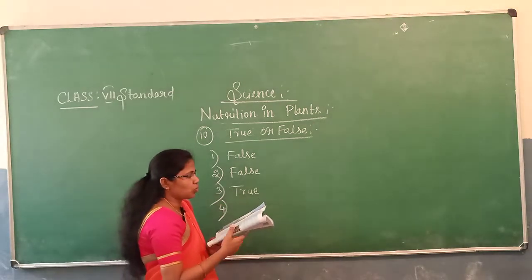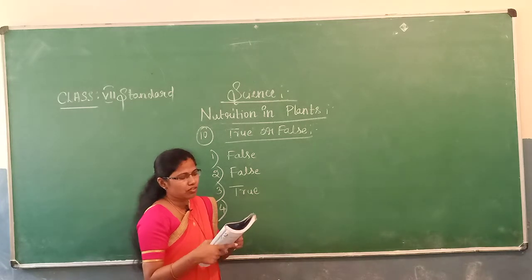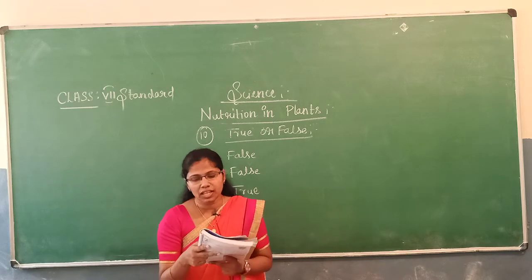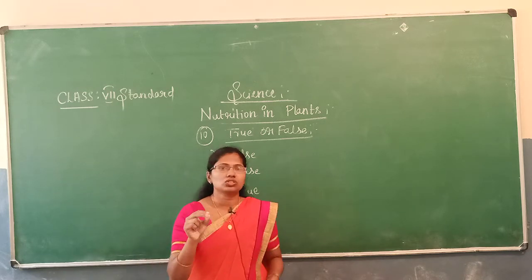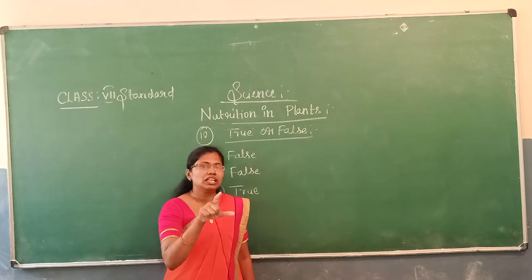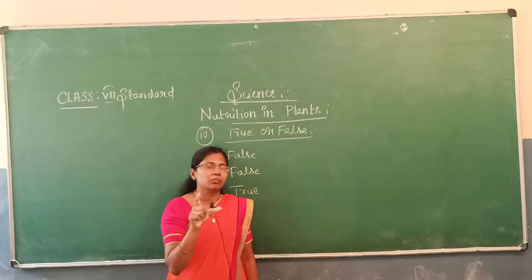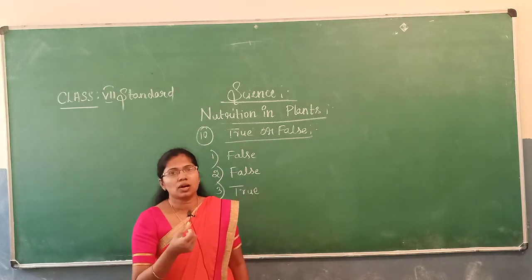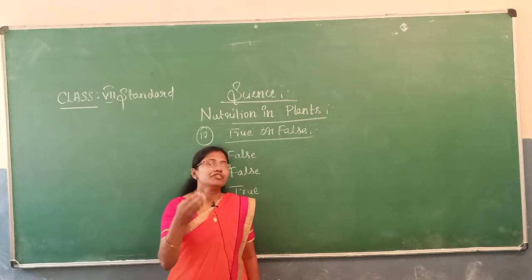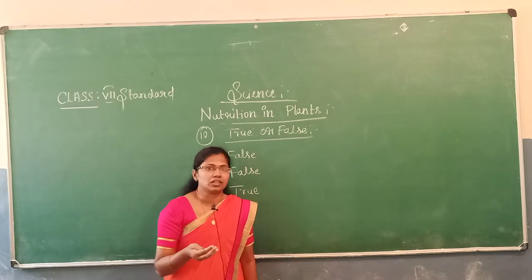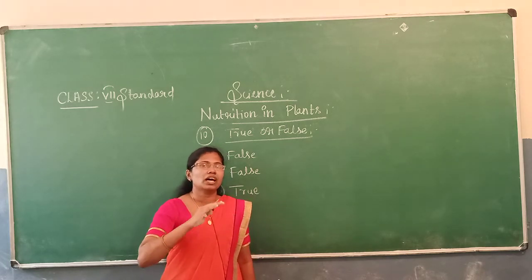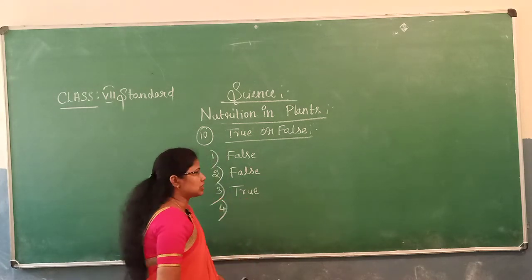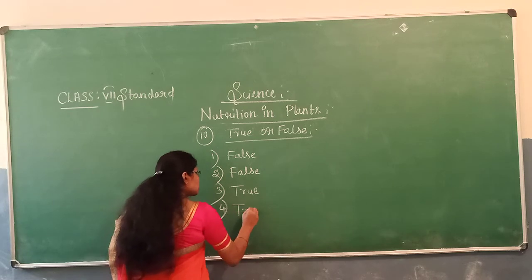The last question: solar energy is converted into chemical energy during photosynthesis. The green colour pigment in leaves absorbs solar energy, which is then converted into chemical energy to prepare food. This statement is true.